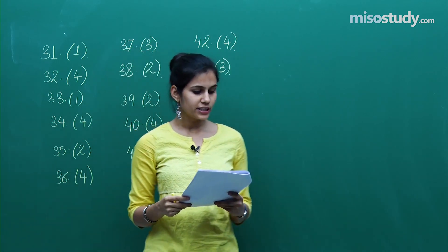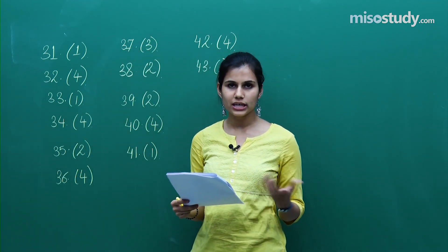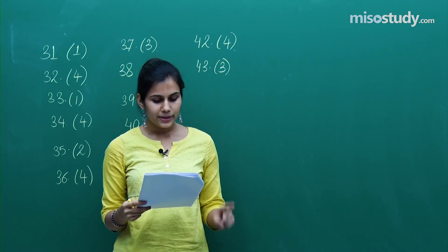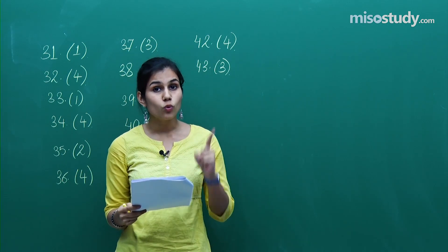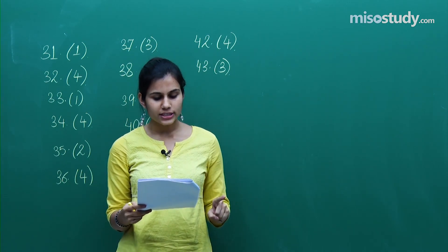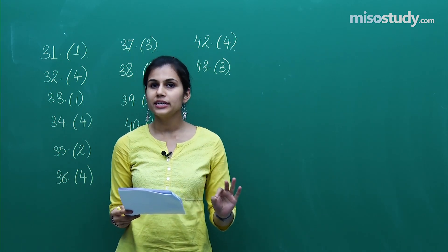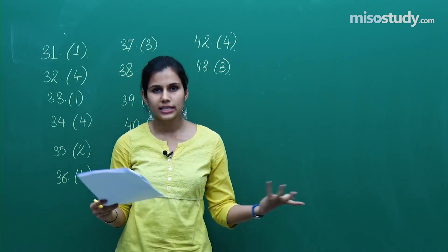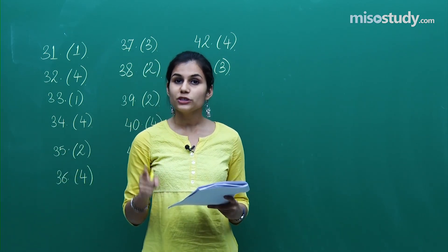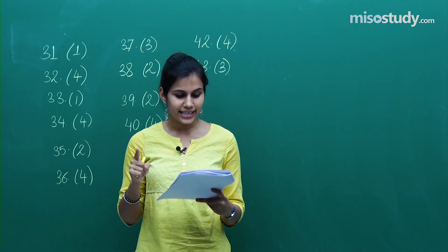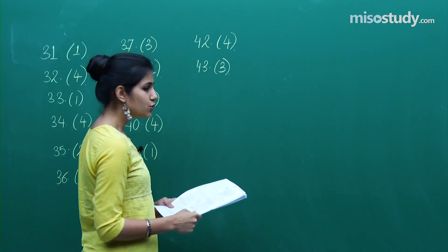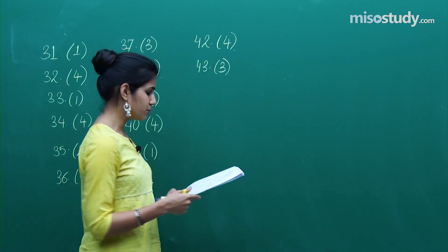Question 44 comes from the limits section. The limit of the given expression is equal to 120 — not 15, not 0, and it definitely does not not exist. The correct option is that the limit equals 120, which is the second option.